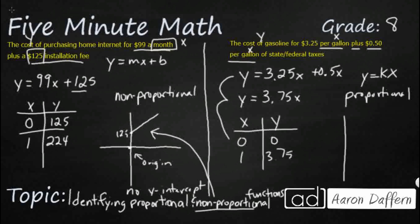So if we were to graph this right here, it is going to go through the origin because it's going to go right there. And then maybe one gallon for 3.75, something like that. It's going to kind of move up this way with that slope of 3.75.